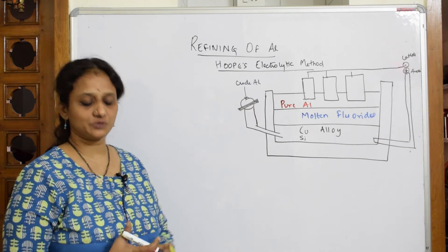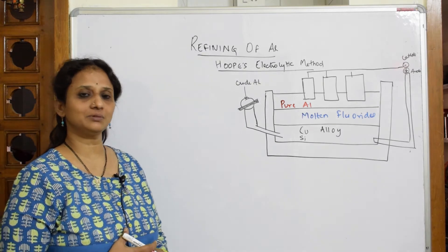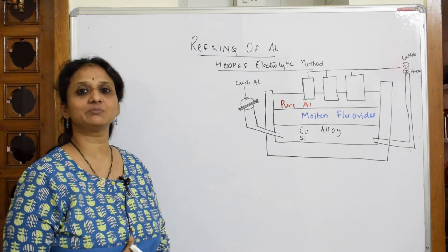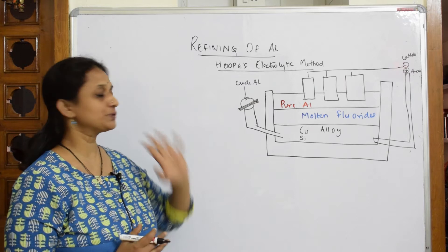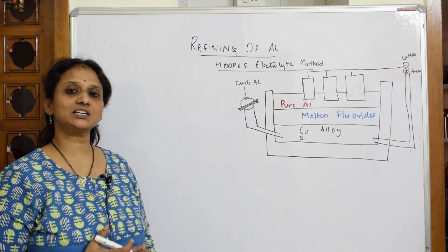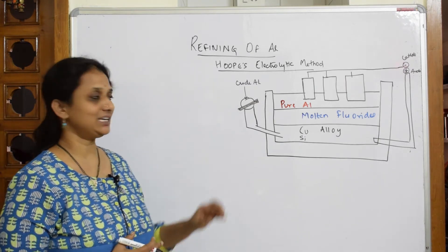Now we'll end the topic with refining of aluminum. Basically, the refining of aluminum uses an electrolytic method called Hoopes electrolytic method.